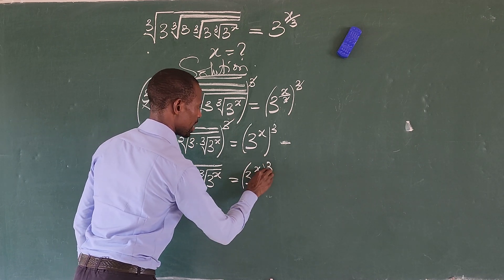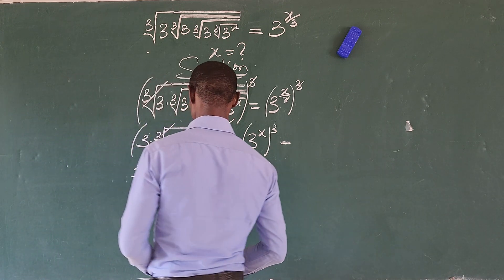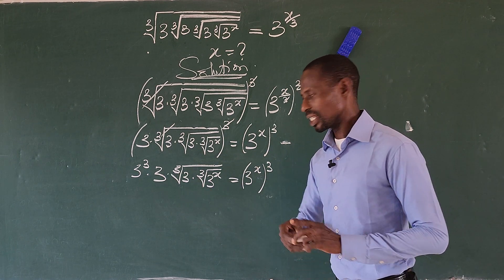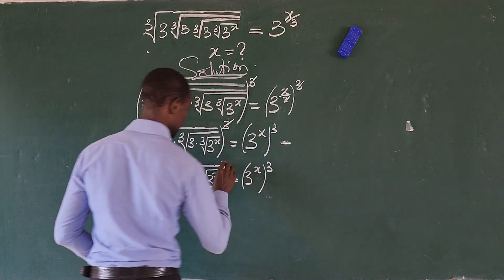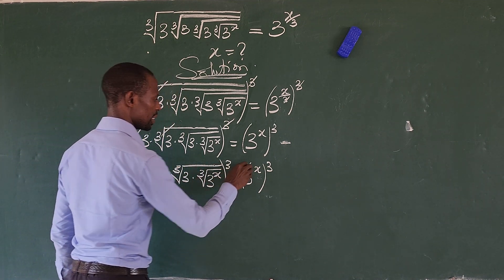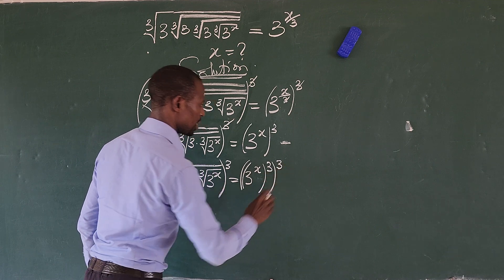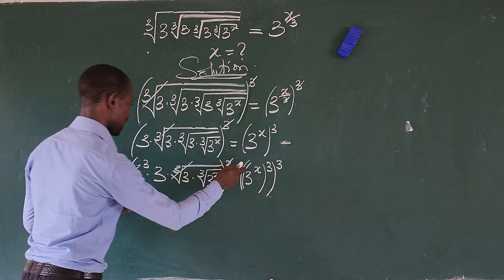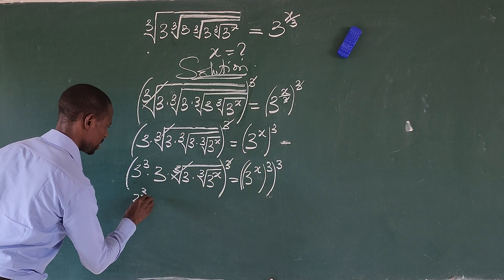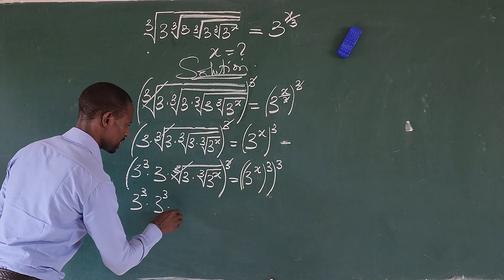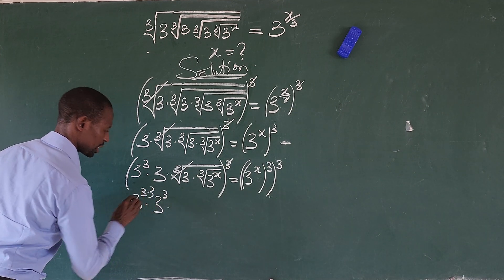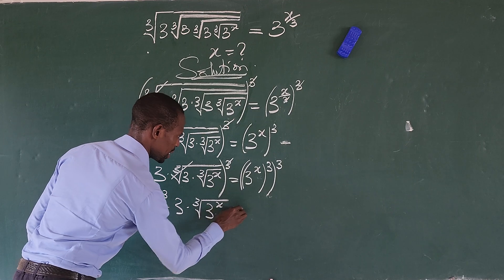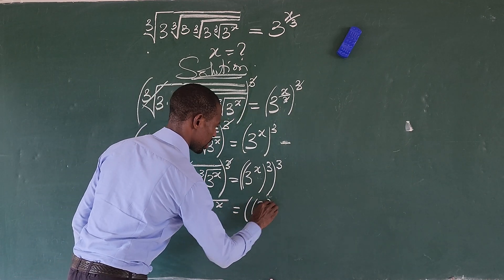We still want to eliminate this radical, so we take the cube of both sides again. This gives us 3 to the power of 3, times 3 to the power of 3, times 3 — that's double 3 — times our 3 times the cube root of 3 to the power of x, equal to 3 to the power of x, all raised to the power of 3, to the power of 3.